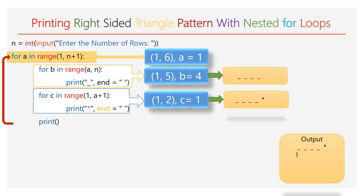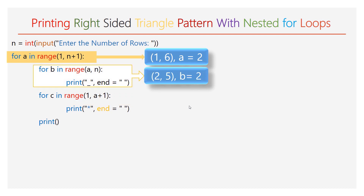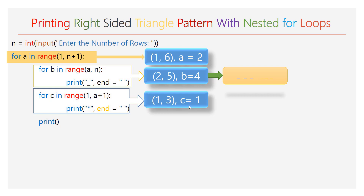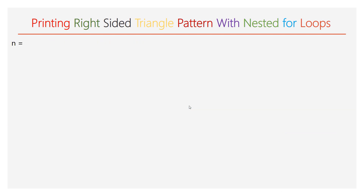The value of a is incremented by 1, and now the value of a will be 2. The first inner loop will have the range 2 to 5 and will iterate 3 times. During each iteration, 1 empty space is printed in the second line. At the end of the inner for loop, 3 empty spaces are printed. The second inner for loop will have the range 1 to 3 and will iterate 2 times. During each iteration, 1 star will be printed. After an empty print function is executed, the cursor enters a new line.